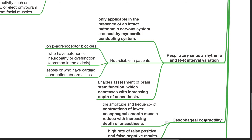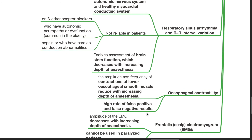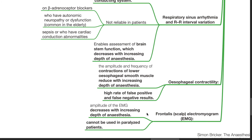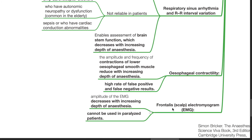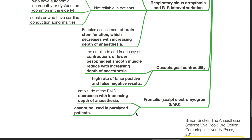Esophageal contractility can be used to assess depth of anesthesia. The amplitude and frequency of contractions of lower esophageal smooth muscles reduce with increasing depth of anesthesia. However, there are high rates of false positive and false negative results. Lastly, frontalis electromyogram (EMG) can be used as well. The amplitude of the EMG decreases with increasing depth of anesthesia. However, this method cannot be used in paralyzed patients.